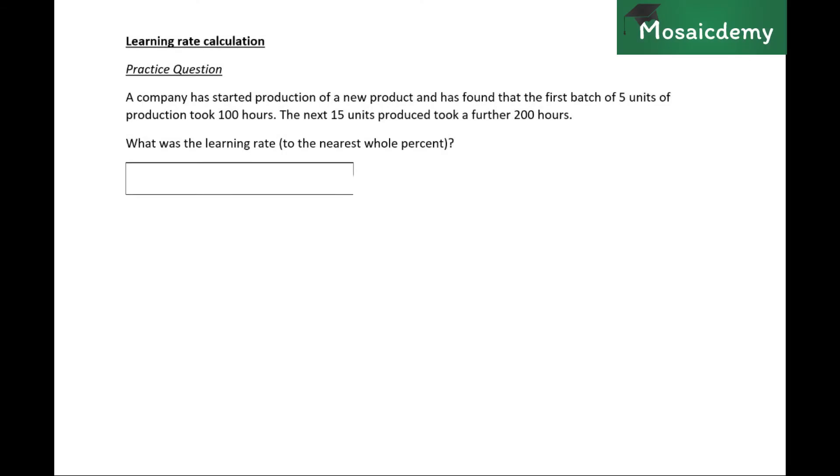Okay, so let's practice this exam-style question, another MCQ. A company has started production of a new product and has found that the first batch of five units—so we're dealing with batches here—of production took 100 hours. Okay, so a is 100 for the formula, but since we're dealing with the calculation of the learning rate, I think we'll be using the table here.